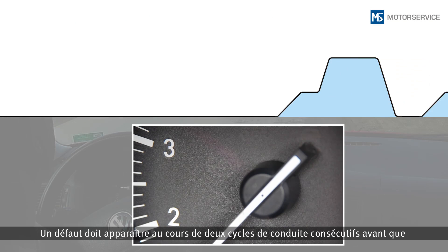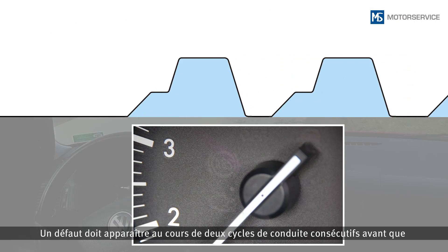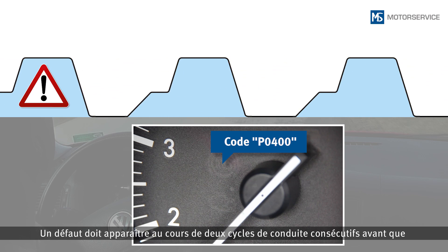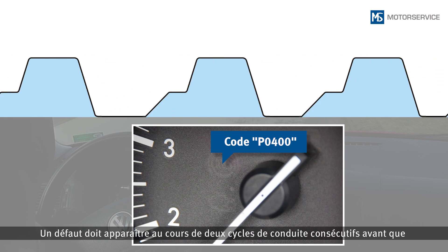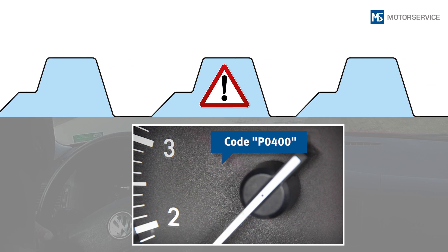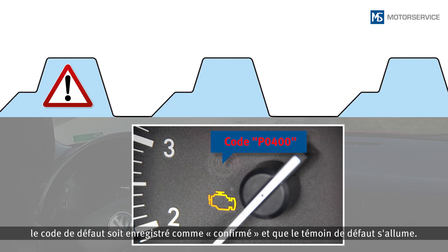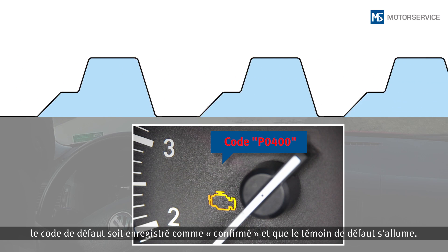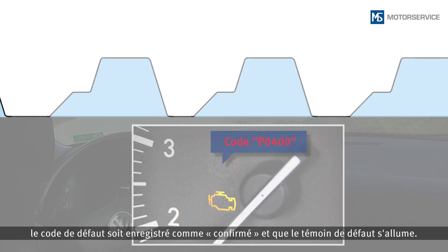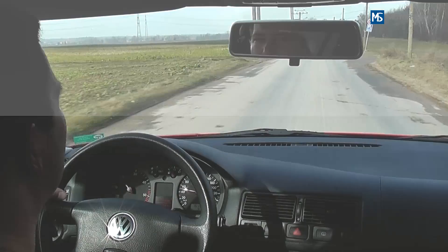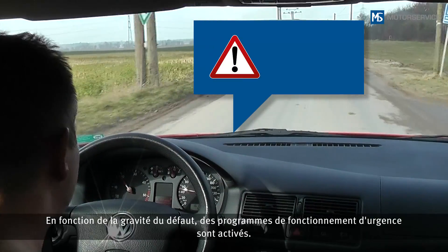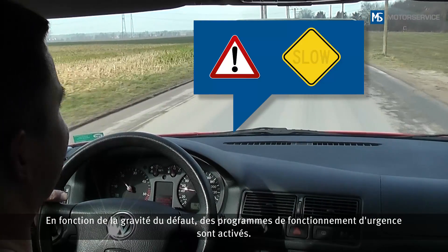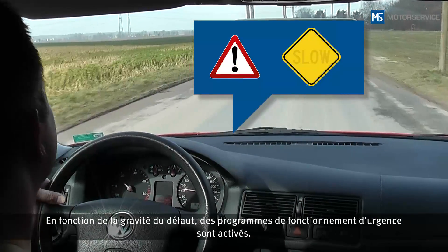Only if an error occurs in two consecutive driving cycles will the Diagnostic Trouble Code, or DTC, be saved as confirmed, causing the malfunction indicator lamp to light up. Depending on the severity of the error, LIMP-HOME programs may be activated.